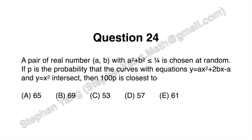Question 24: a pair of real numbers a and b, with a squared plus b squared less than or equal to one quarter, is chosen at random. If p is the probability that the curves with equations y equals ax squared plus 2bx minus a and y equals x squared intersect, then 100p is closest to which of the following?